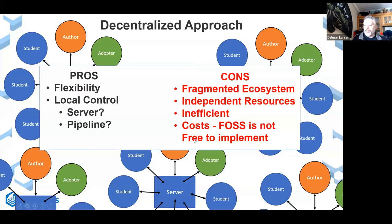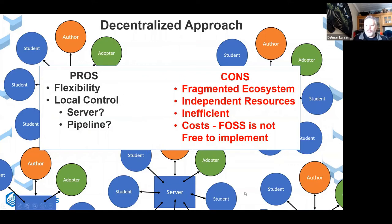Decentralized approaches are often enabled by FOSS — free and open source software — because the code is free to distribute and run. However, the key point is that while the code itself is free, implementation is not. Free and open source software doesn't mean it's free to implement or free for students to capitalize on. There must be resources invested to make it work, and it can actually be quite pricey even though the code is free.